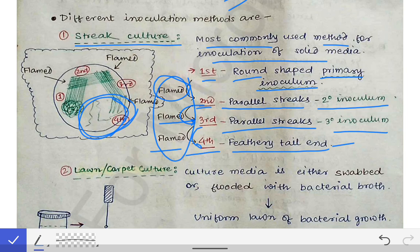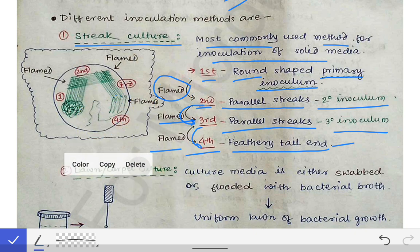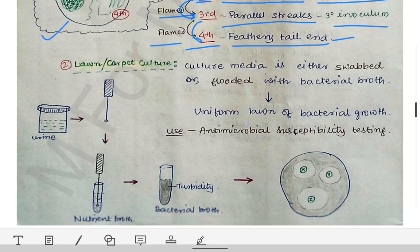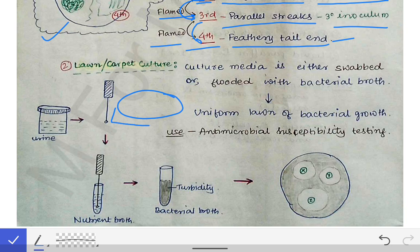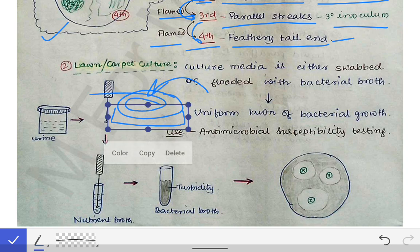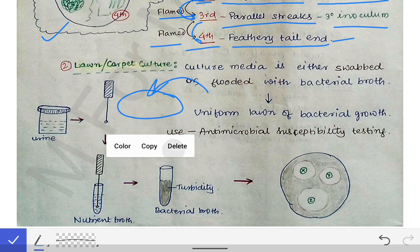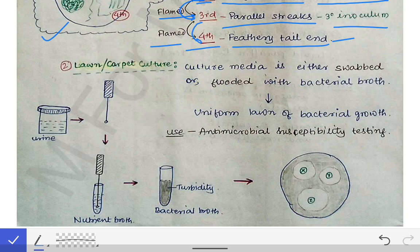That covers the streak culture. The second inoculation method is the lawn culture, also called carpet culture. Just as a carpet covers the entire ground, in lawn culture we spread the specimen all over the culture media — we flood the entire petri dish with the specimen.